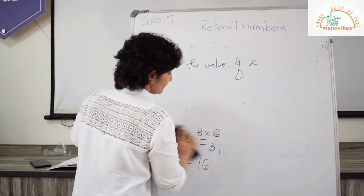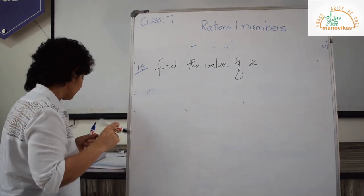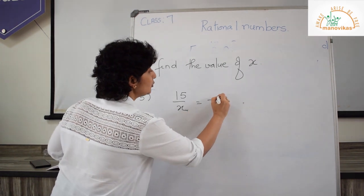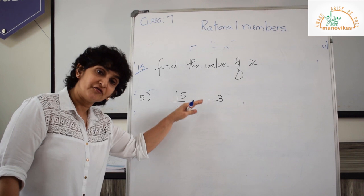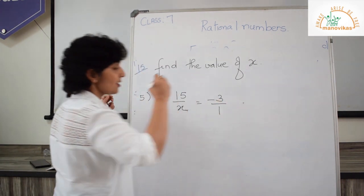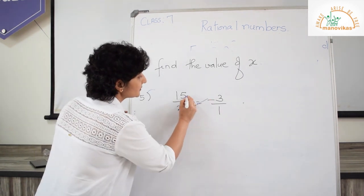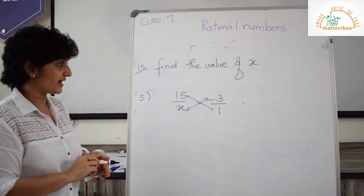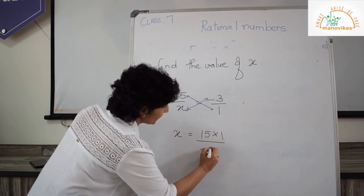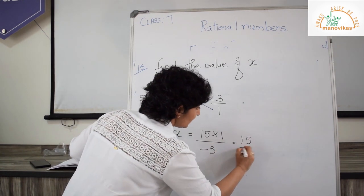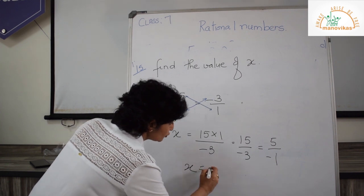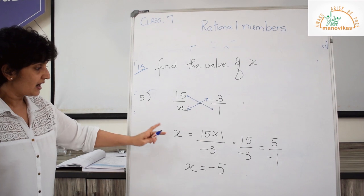Let's do another sum — the 5th: 15 upon x equals minus 3. When I write minus 3 in rational form, it is minus 3 upon 1. Cross multiplying: wherever there is x, that becomes the denominator. So x equals 15 multiplied by 1 upon minus 3, which gives 15 upon minus 3. Simplifying: 3 ones up and 3 fives up, so x equals minus 5.